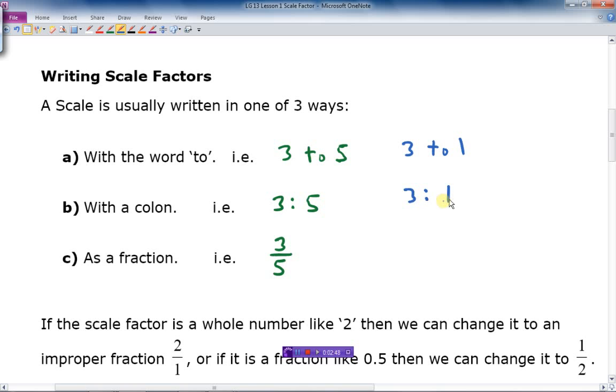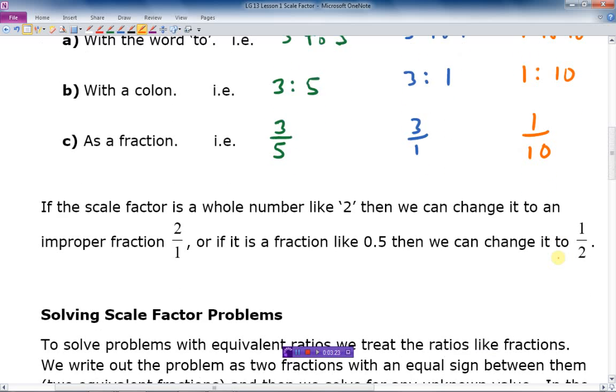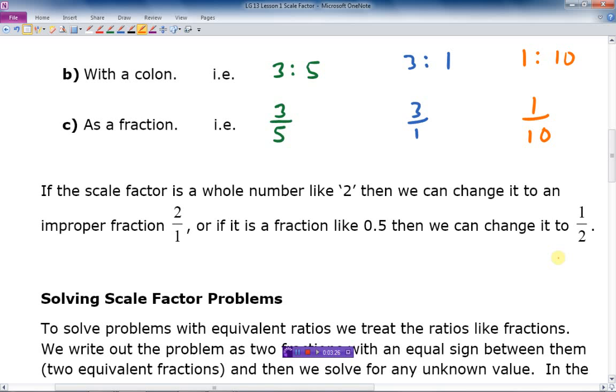Or three to one written as a fraction, in this case, improper fraction. That's okay. And one more example was of when I have a reduced type thing. So I would go one to ten, or one to ten like that as a fraction. Again, it's one-tenth of the original size. So let's keep going down here. If the scale factor is a whole number, like two, then we can change it to an improper fraction, two to one, right, like that.